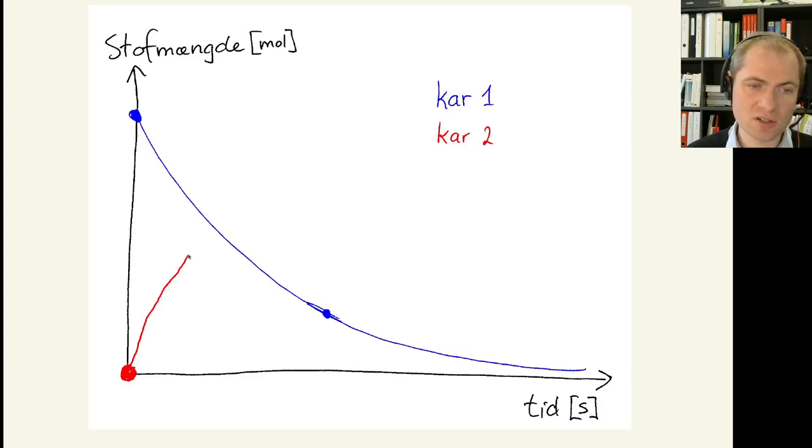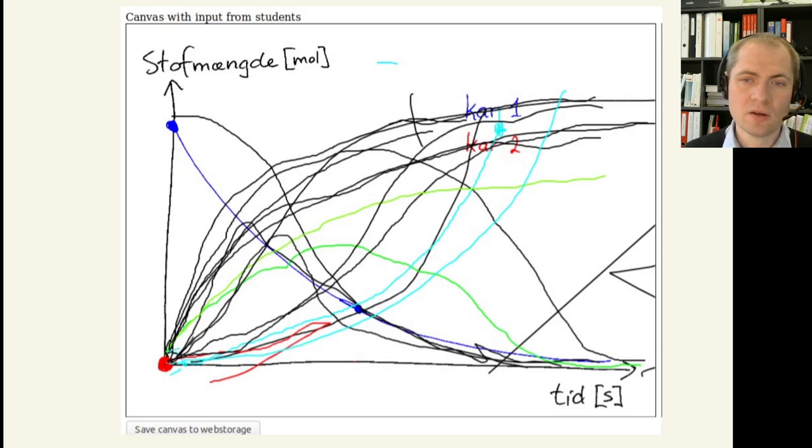We could ask the students to actually draw this. And the right answer is something like this, where initially it starts, goes on to a maximum, and then decays afterwards, goes down exponentially.